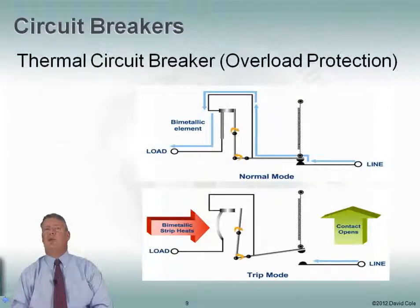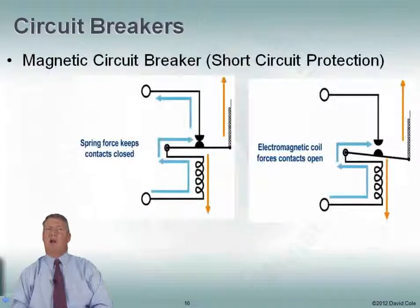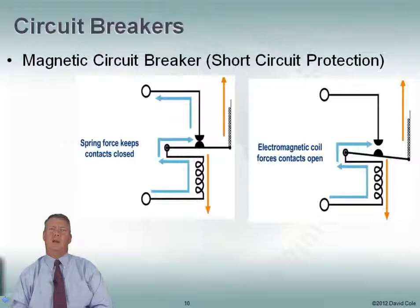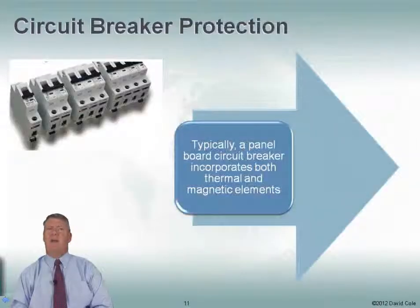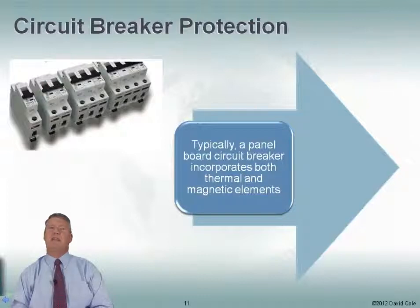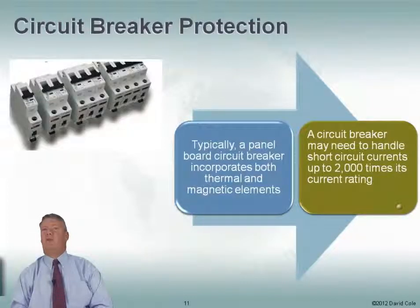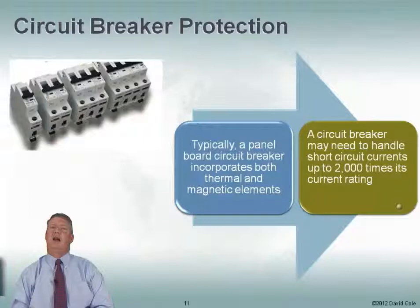There are two types of circuit breakers. One is a thermal circuit breaker that protects against overloads — if I get an overload, it trips the breaker, opens up the circuit, and stops power flow. The second type is a magnetic circuit breaker, which provides short circuit protection. The nice thing is a typical panelboard circuit breaker has both thermal and magnetic elements, protecting against both overloads and short circuits. A circuit breaker may need to handle short-term currents up to 2,000 times its current rating.